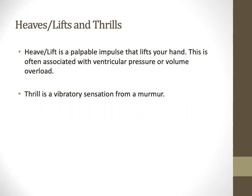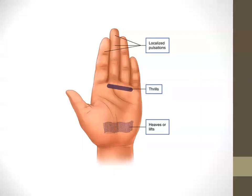Heaves and lifts are palpable impulses that literally lift your hand, associated with ventricular pressure or volume overload — look for RV or LV heaves. A thrill is a palpable vibratory sensation from a murmur; palpate in the aortic, pulmonic, tricuspid, and apical regions where murmurs would be expected. Use the base of the hand to detect heaves and lifts, and the finger pads to localize pulsations including PMI.